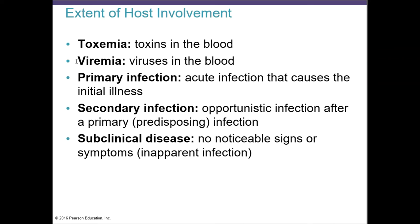Viremia is the presence of viruses in the blood. A primary infection is an acute infection that causes an initial illness and can predispose the patient to a secondary infection. A secondary infection comes from an already compromised patient. An opportunistic infection can follow the primary infection — for example, a person with AIDS whose immune system is weakened by HIV is more prone to develop a secondary infection, such as pneumonia caused by a fungus.